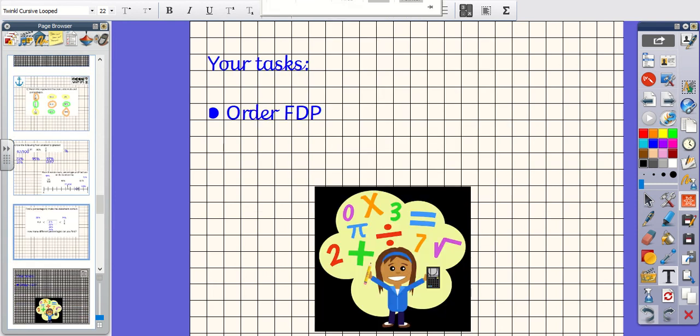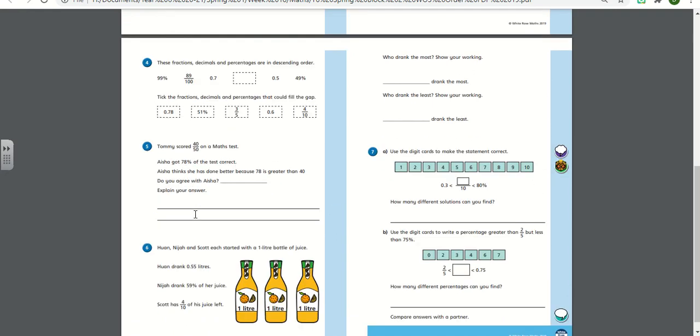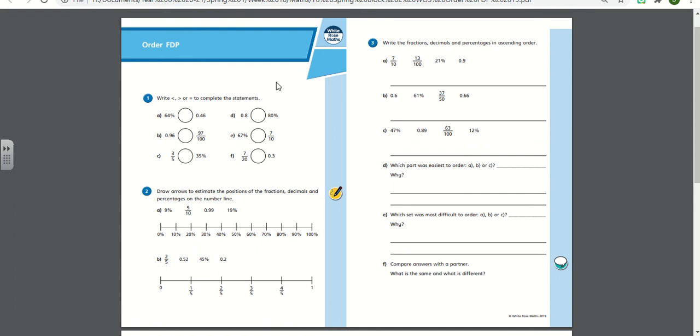Your work today is you are going to be ordering and comparing fractions, decimals, and percentages. You have got seven questions to complete. Remember, if you have a percentage and then a decimal, convert it into the same, so either percentage or decimal, and then you will be able to complete the sentences using greater than, less than, or equal to. Remember to always put the number that you are given. So you may convert them to make it easier to work out, but you need to make sure that when you place the number on the number line, it's the original number that is in the question. Pause the video here and come back when you are ready to do problem solving and reasoning.